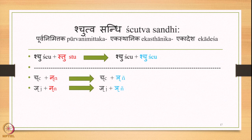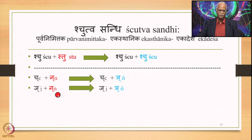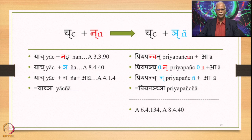Let us now look at Shchutva Sandhi with Purvanimittaka Ekasthanika Ekadesha. We have template examples: Shchuhu plus Stuhu, and Stuhu will be replaced by Shchuhu. For example, we have Chuhu plus Na, and 8.4.40 applies and returns the output Chuhu plus Yen. Similarly, we have Juhu plus Na as the input and the output is Juhu plus Yen.